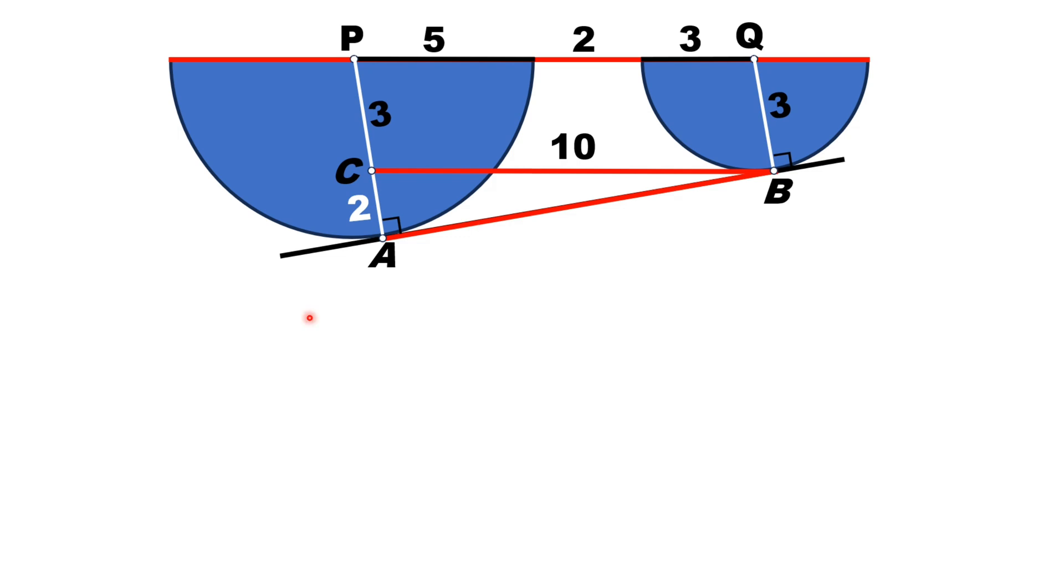Now, ABC is a right triangle having right angle at A. So if we consider this triangle ABC, then BC is hypotenuse and CA and AB are the other sides.